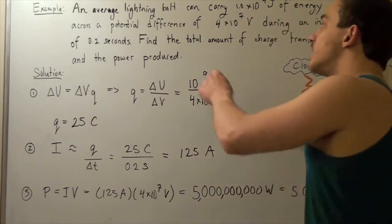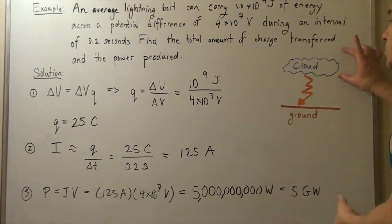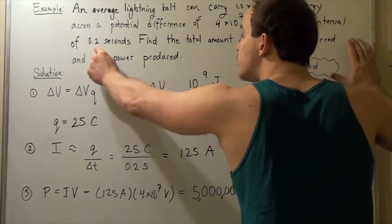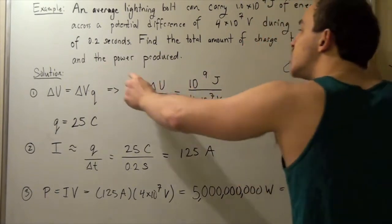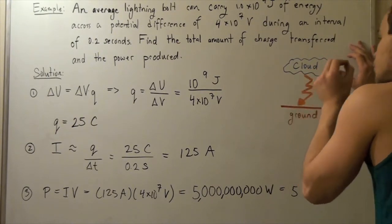We want to find the total amount of charge transferred from our cloud to our ground in a time interval of 0.2 seconds, and then we want to find the total power produced by this single lightning bolt strike.